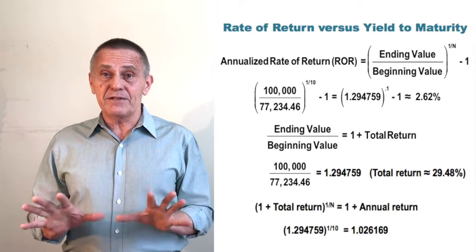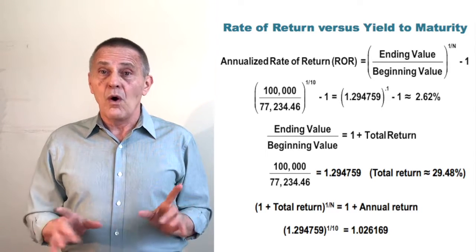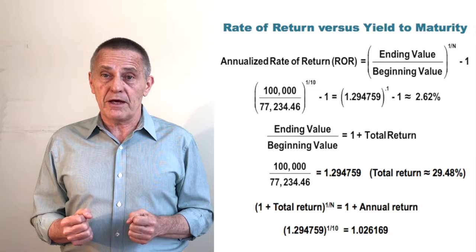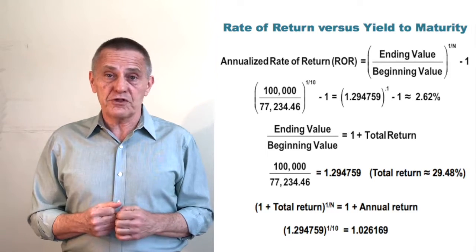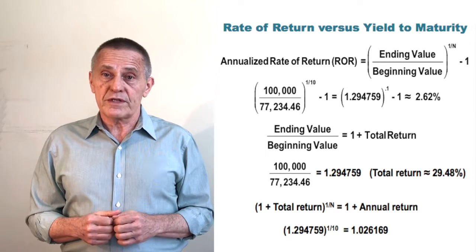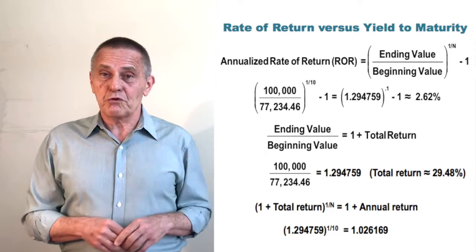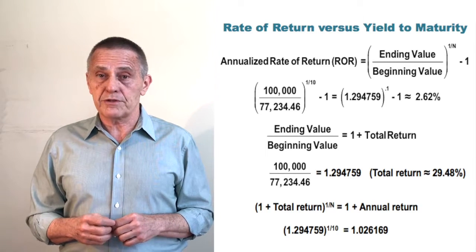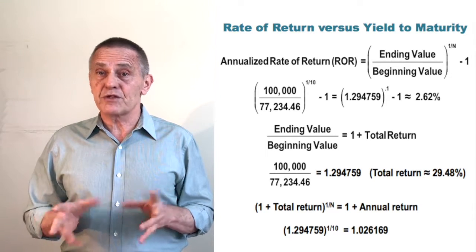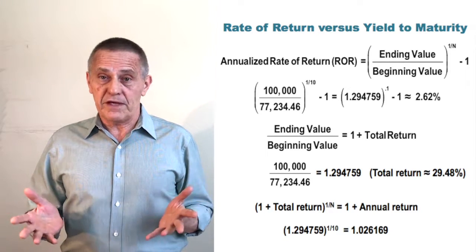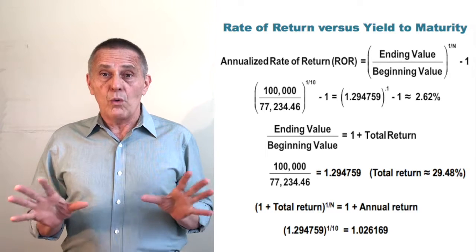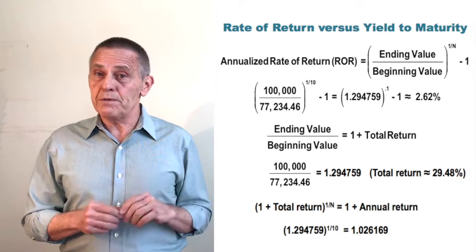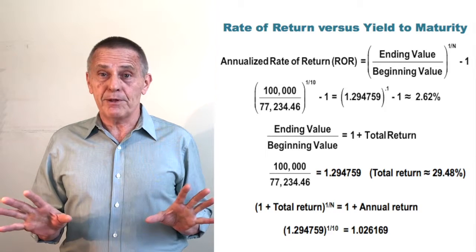You'll note that 2.62% is not the yield to maturity, which was 2.60%. Why the difference — since there are no coupons and therefore no uncertainty about reinvestment income? The answer has to do with number of periods. Price and yield conventions are based on compounding periods, whereas rates of return are normally done on an annualized basis. That's why we used 20 periods in the pricing example but only 10 periods in the rate-of-return calculation.